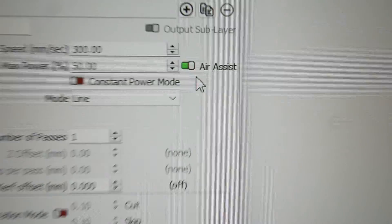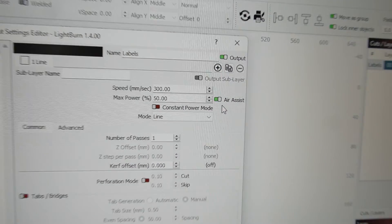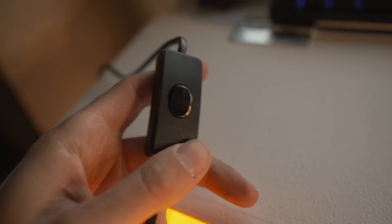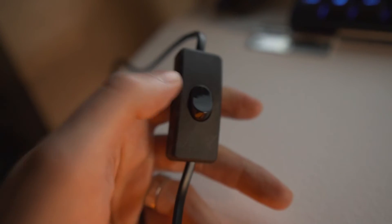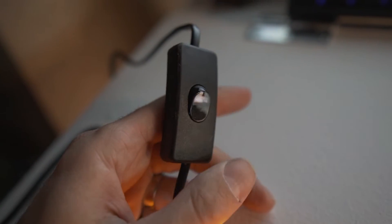So there's no way to control the Air Assist from within Lightburn or any software for that matter. It's just going to have to be a manual thing. You have to remember to turn on and off when you use your laser.